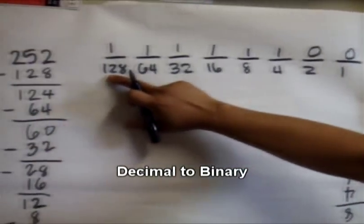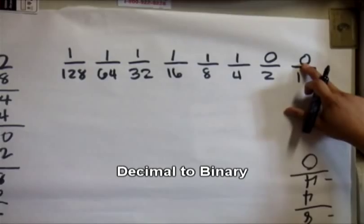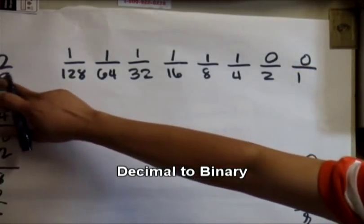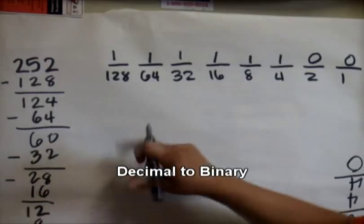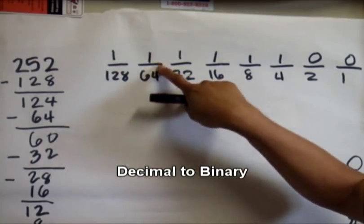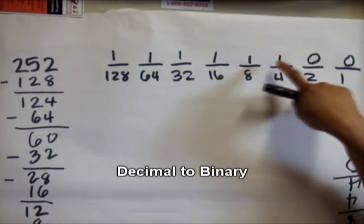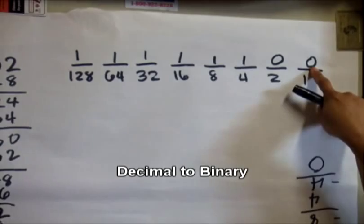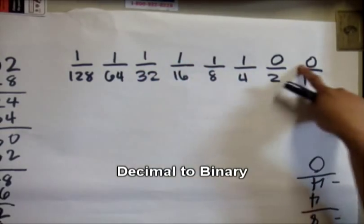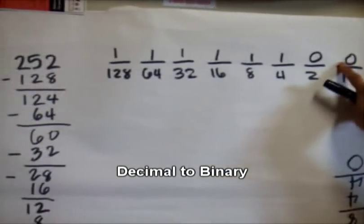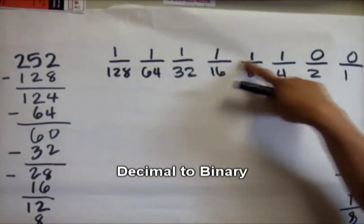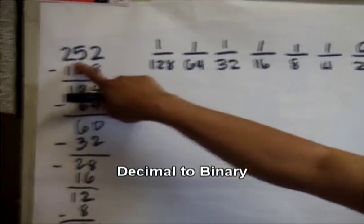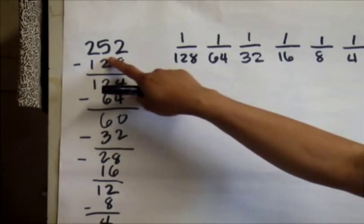Now we have the decimal number 252. The result is 11111100, which is our binary number. This is the conversion of 252 from decimal to binary.